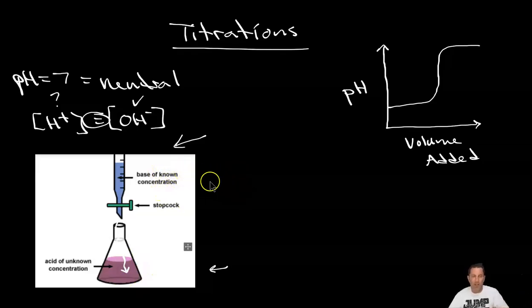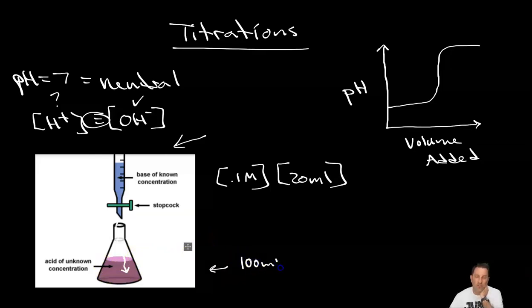So let's just talk this through. Let's say that I knew the concentration of this base was 0.1 molar and let's say I had to add 20 milliliters in order for this to become neutral. Now this acid I don't know its concentration but I would know its volume. Let's say it was 100 milliliters.